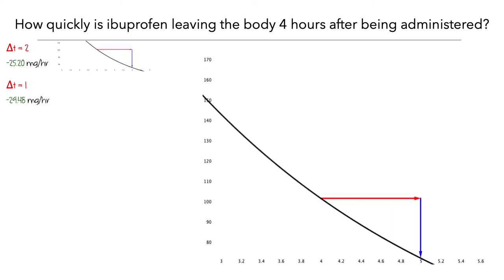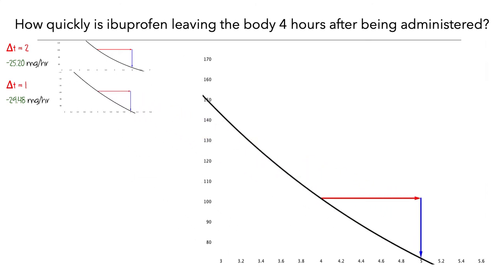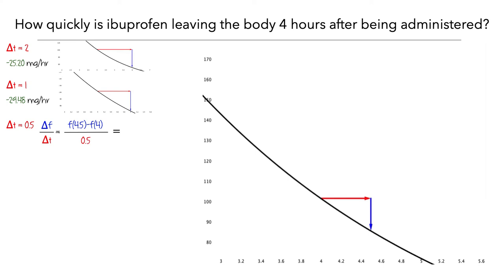Let's zoom in a bit to see this better. We'll keep this image on the screen to compare with some other approximations. Now let's look at what would happen if we used a smaller delta t. Here, delta t is equal to 1 half. We can again compute the average rate of change over this interval by dividing the change in f by the change in t. So when delta t is 1 half hour, the average rate is –32 mg per hour.